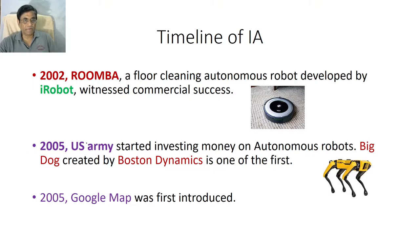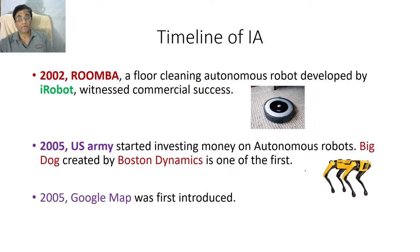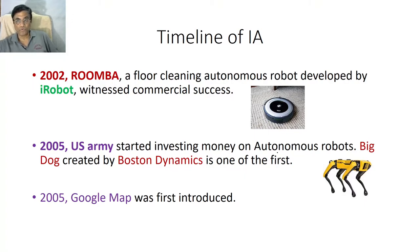Then in 2005, the US Army started investing a lot of money in autonomous robots. As a result, Boston Dynamics developed Big Dog, which served as a co-worker for the Army in Afghanistan and other places where terrain is very rough. They could carry loads which earlier horses used to carry in those terrains, so they were deployed there.